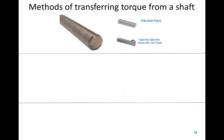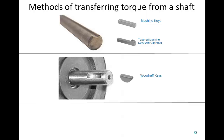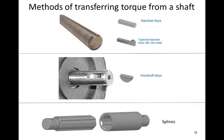Tapered keys, also known as gib head keys, are used in a similar way. Woodruff keys fulfill the same purpose but don't risk sliding along the length of the shaft. Spline shafts are more expensive but are able to transfer higher torques.